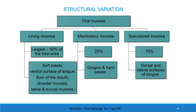Structural variation. Oral mucosa is divided into lining mucosa, masticatory mucosa, and specialized mucosa. Lining mucosa constitutes the largest percentage at 60%, masticatory mucosa constitutes 25%, and specialized mucosa constitutes 15%. Soft palate, ventral surface of the tongue, floor of the mouth, alveolar mucosa, and labial and buccal mucosa are lining mucosa. Gingiva and hard palate are masticatory mucosa, while dorsal and lateral surfaces of the tongue are specialized mucosa.